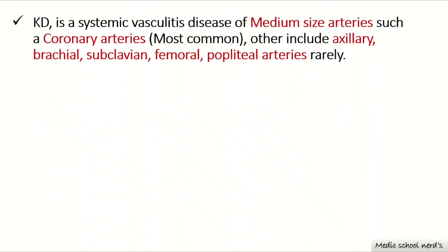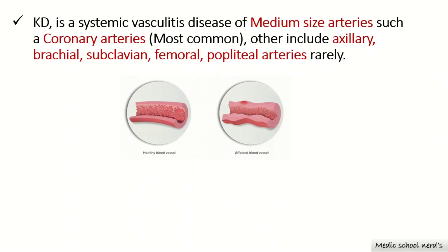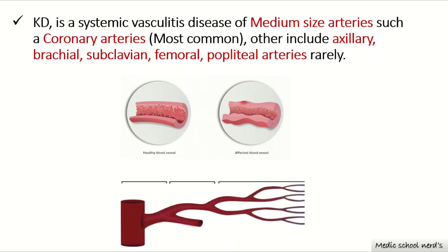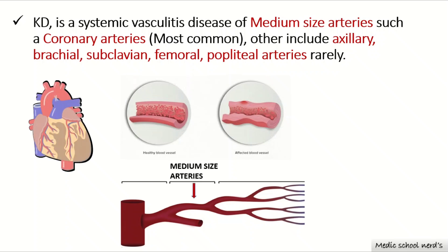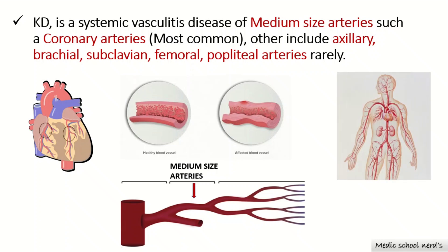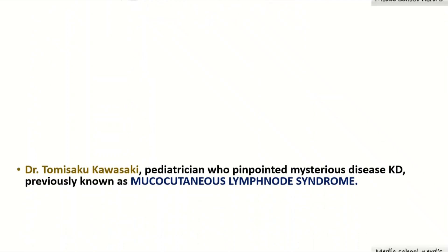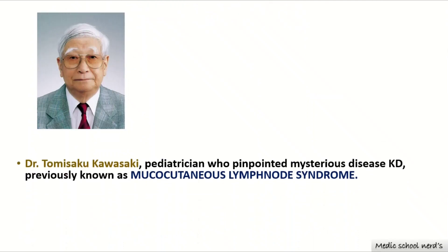Today's topic is Kawasaki disease. Kawasaki disease is a systemic vasculitis — an inflammation of blood vessels, which can be venous or arterial. In the arterial system, we have large, medium, and small arteries. Kawasaki disease usually affects medium-sized arteries, most commonly the coronary arteries. Other studies have shown it can also affect axillary, brachial, subclavian, femoral, and popliteal arteries.